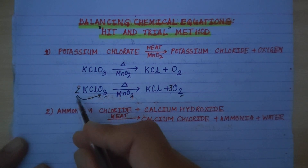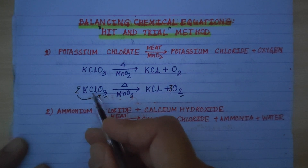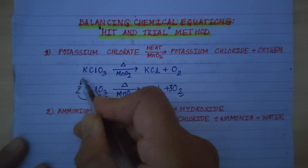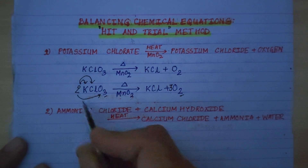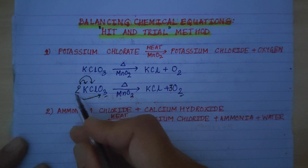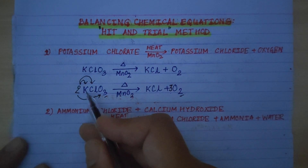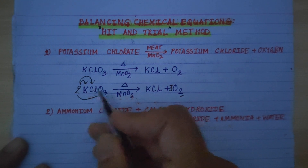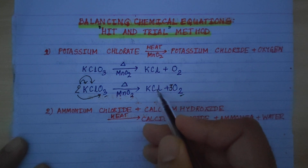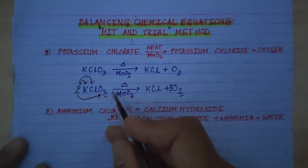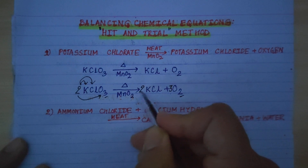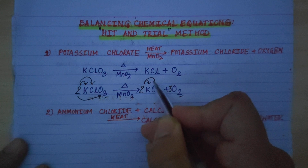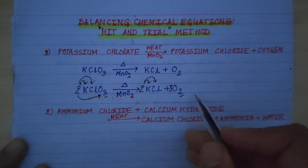But placing 3 in front of O2 means we placed 2 in front of KClO3, so potassium and chlorine became unbalanced. Potassium count is now 2 on the reactant side; chlorine count is 2 on the reactant side. We place coefficient 2 in front of KCl on the product side. Now potassium is 2, chlorine is 2 — this reaction is balanced.